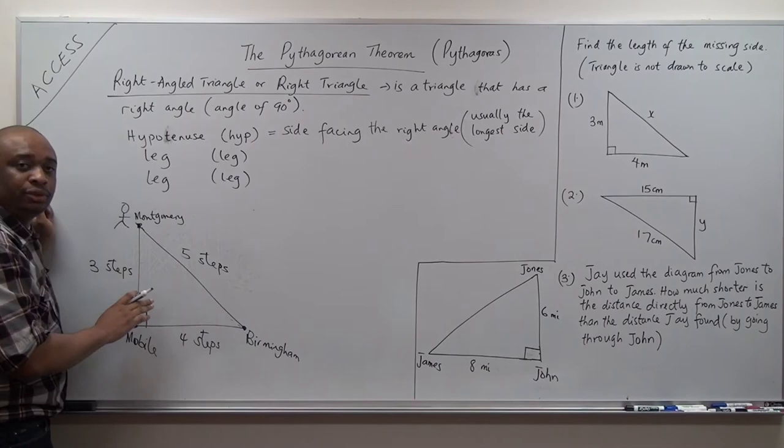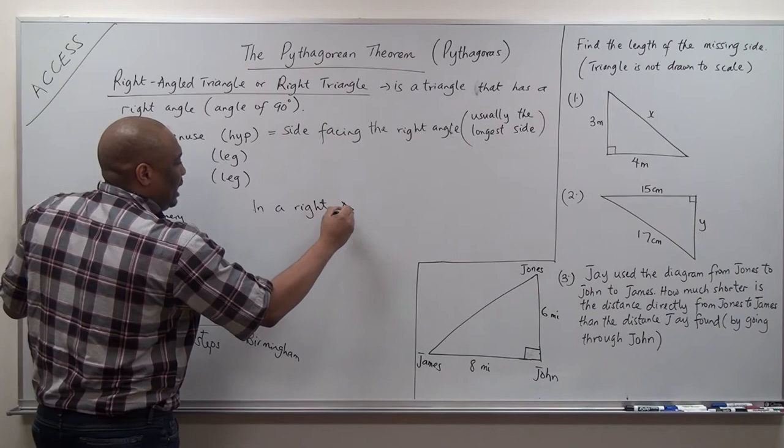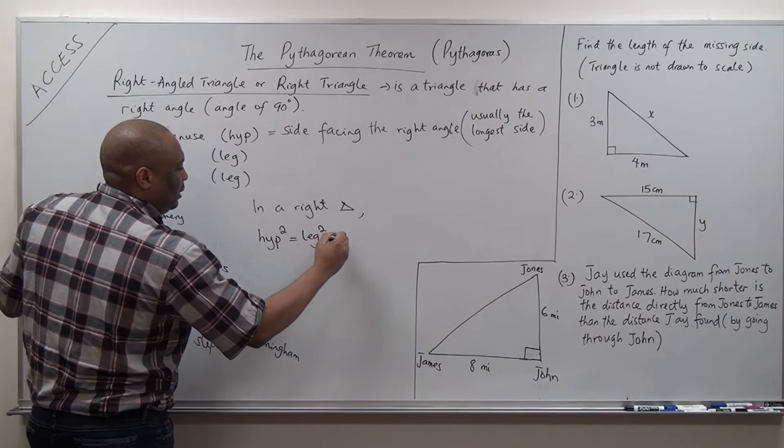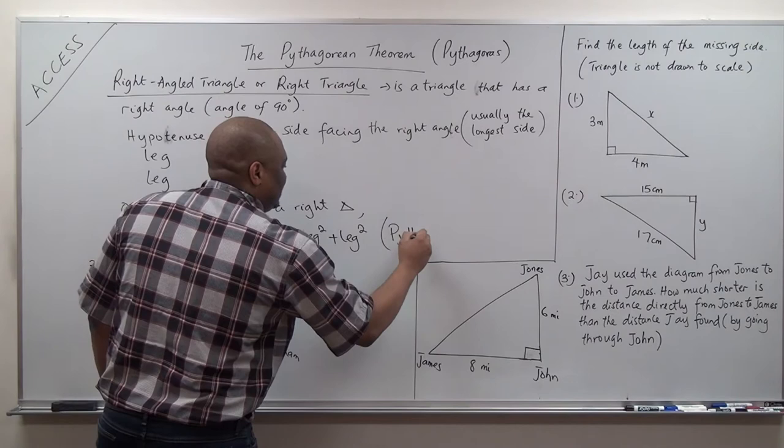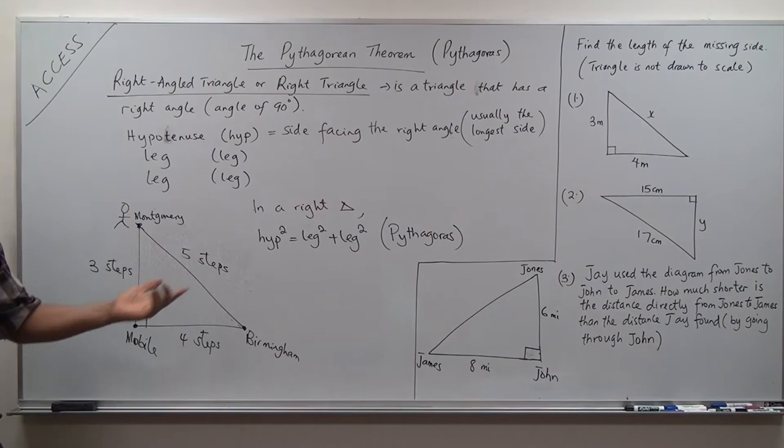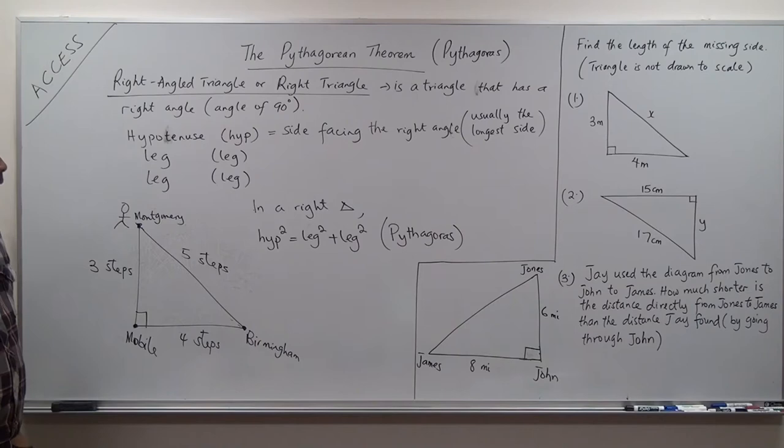Pythagoras said that in a right triangle — and it must be a right triangle — the hypotenuse squared will be equal to the leg squared plus the leg squared. Give him the credit. Let's write: hypotenuse squared equals leg squared plus leg squared. He discovered it; that's fine — give him credit.